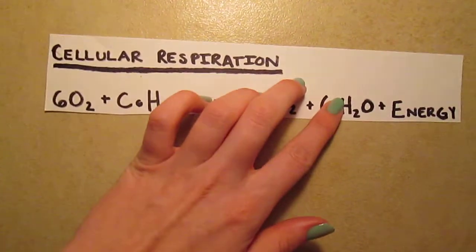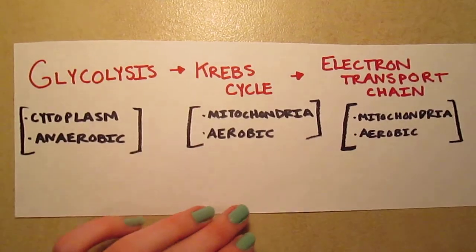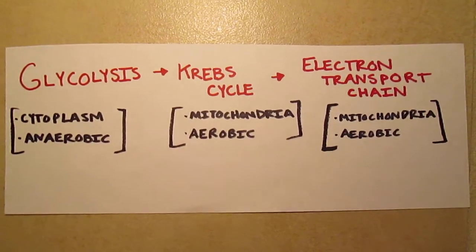All living cells go through cellular respiration. It's the process that makes energy from food. Glycolysis, Krebs cycle, and electron transport chain are the three steps through which ATP is obtained from food.